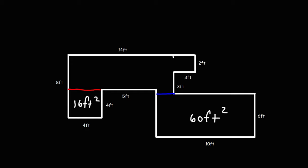Now let's calculate the area of the rectangle on the upper right. So it's 2 by 3, which will give us an area of 6 square feet.